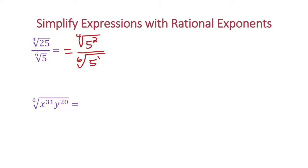Now to write this as a rational exponent, we take base 5 and write it with a fractional exponent. For the 4th root of 5 squared, that becomes 5 to the 2 over 4. Similarly, the 6th root of 5 becomes 5 to the 1 over 6. The root outside is your denominator and the power inside is your numerator.